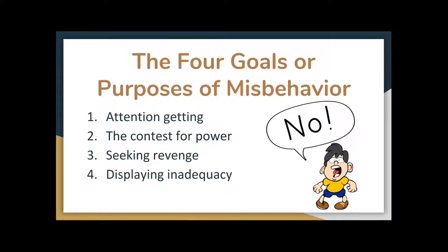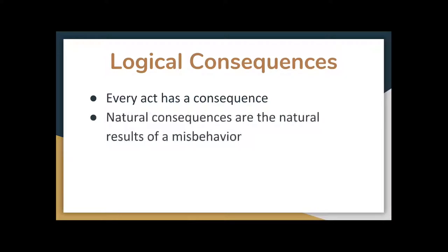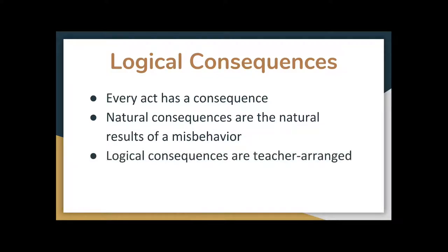Dreikurs believed that to help students see when their actions are out of line, there must be consequences — every act has a consequence. For example, if I spend all my lunch money on sweets, I won't have money for real food; if I run with scissors, I can fall and get hurt. These are natural consequences that teachers don't facilitate — they just happen. But what a teacher does facilitate is logical consequences, which are not punishments seen as retaliation, but consequences tied directly to the behavior.